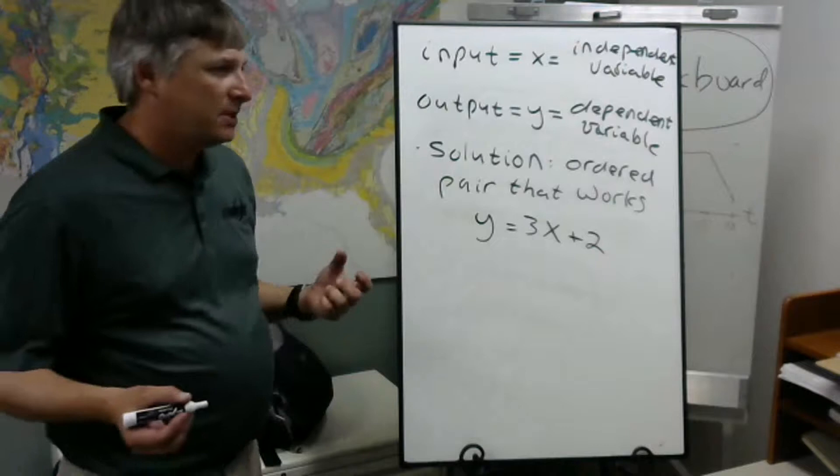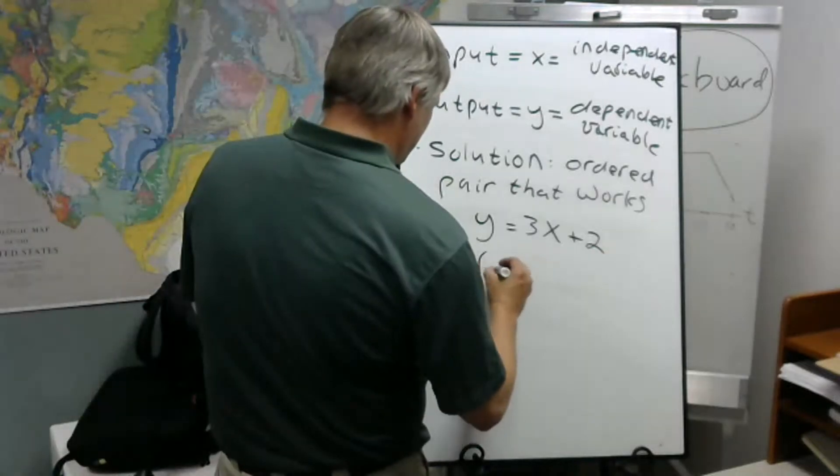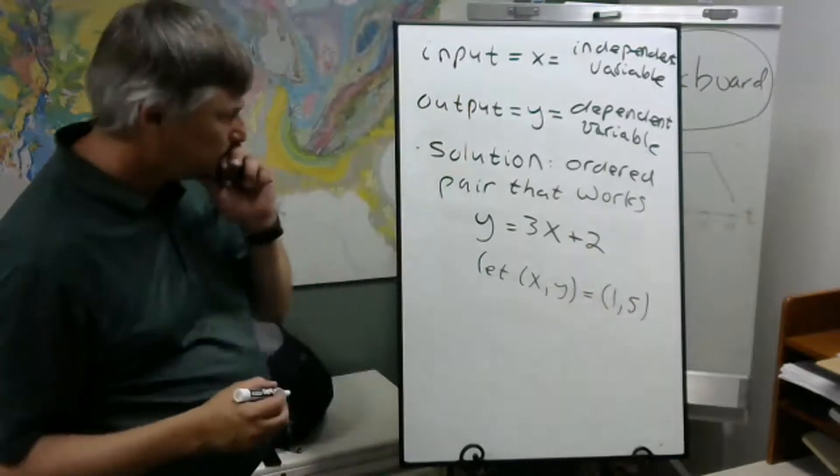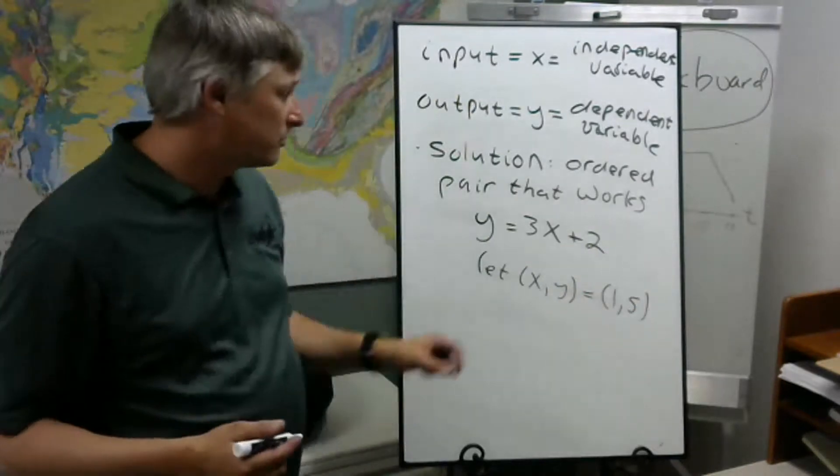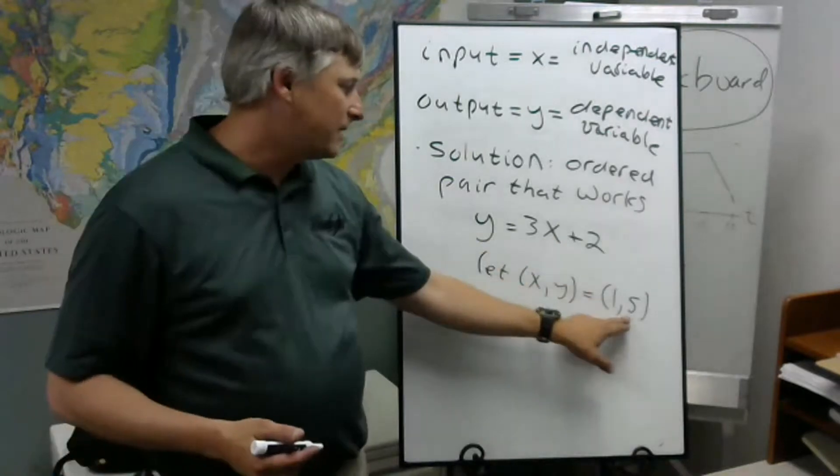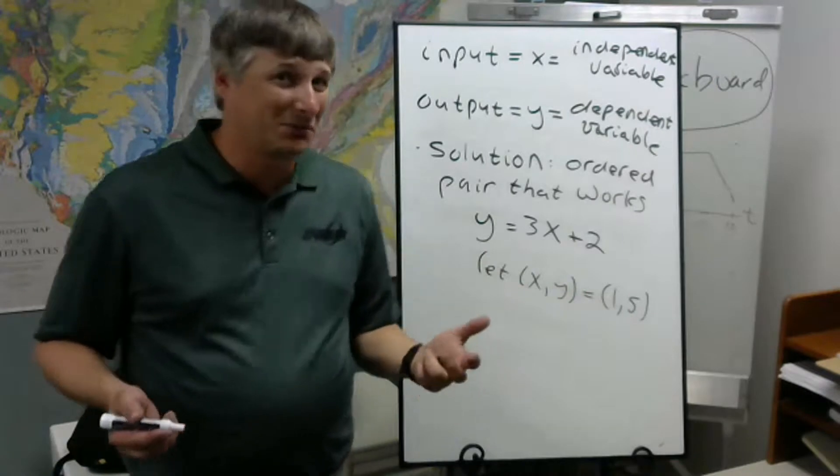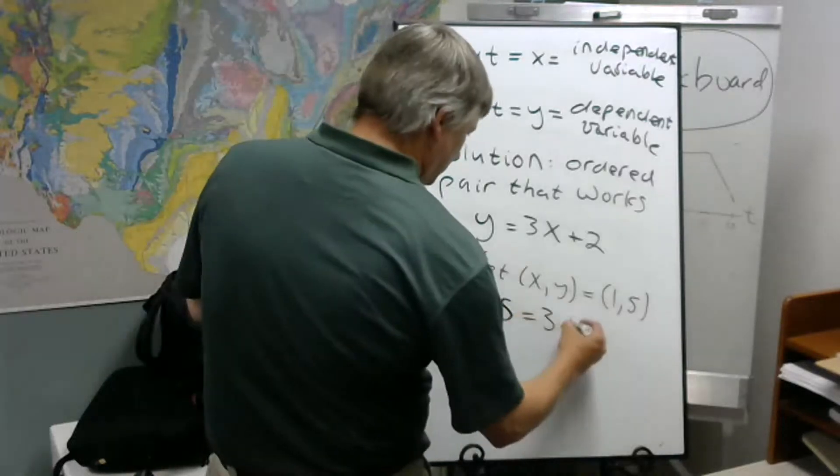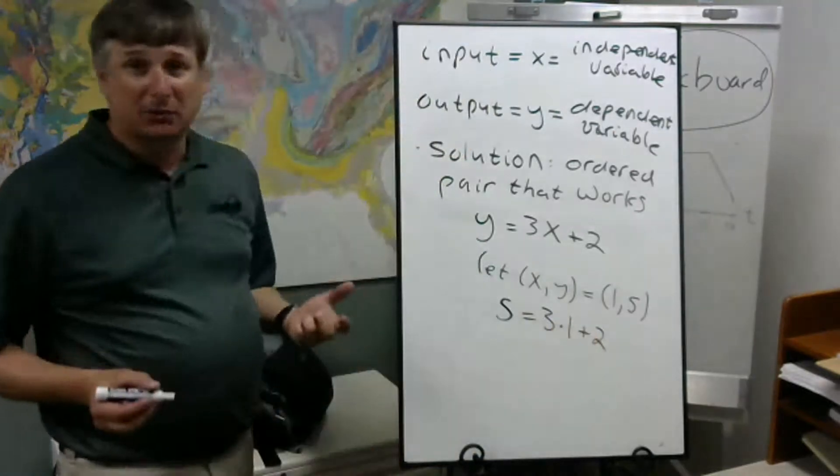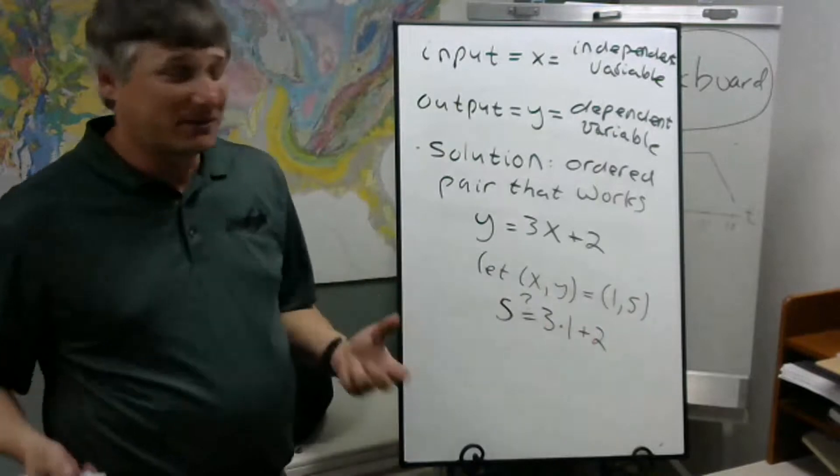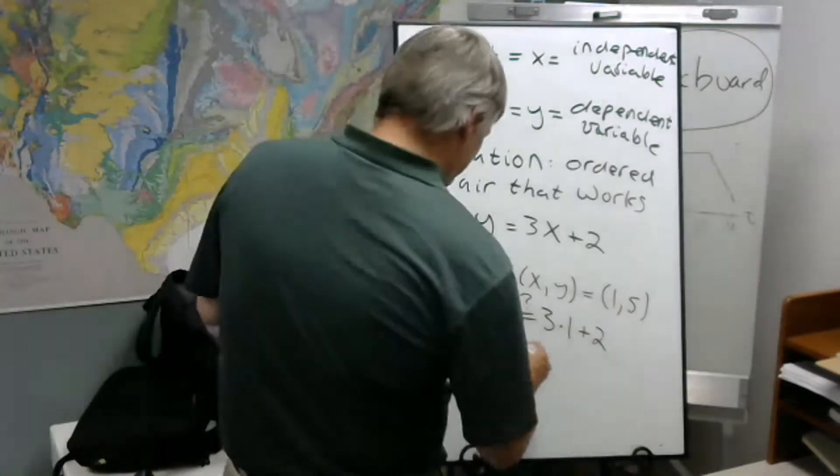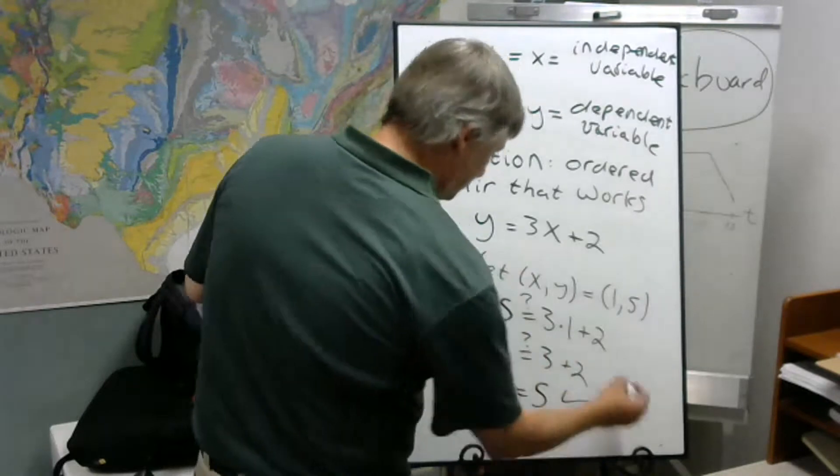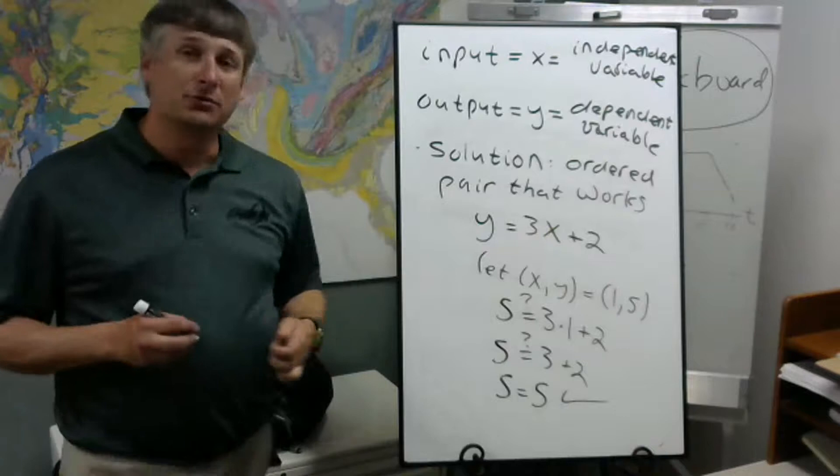Let's say we take the ordered pair 1 and 5. So what we're going to do, we're going to substitute, we're going to replace the x with 1 and the y with 5. We're going to see if this equality sign still makes sense, it's still true. Let's see. So y will be 5, equals 3 times 1 plus 2. Well, is this actually true? Sure enough, 5 is equal to 5. So 1 comma 5 is a solution to that equation.